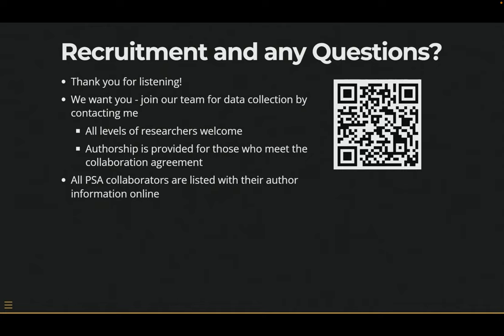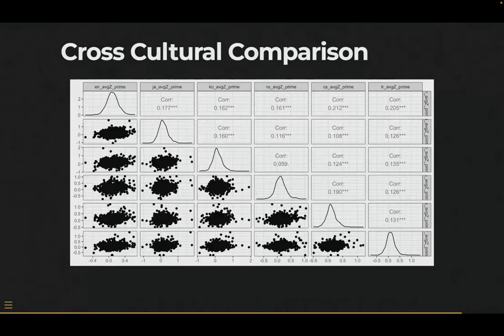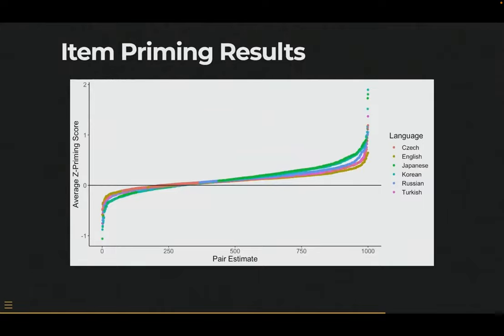Q: It seems inevitable that some of your word pairs are going to give you inhibitory effects — what are you going to make of that? A: Obviously yes, all of these down here, and some very big ones. I've started to look a little bit at word length — if the word lengths are very different between the words, the longer one will take longer for obvious reasons. And the cosines — because not all the cosines are very strong because of the translations. You can't perfectly control all of the things that influence RT across all of them.